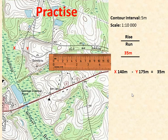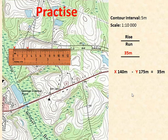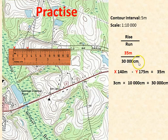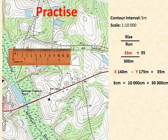Let's measure across — bringing the ruler in, that is 3 centimetres. We multiply 3 centimetres by 10,000 centimetres, giving us 30,000 centimetres. They're in the wrong units — metres and centimetres — so we scrub two zeros off, converting it to 300 metres. We divide by the numerator: 35 divided by 35 gives us 1, and 300 divided by 35 gives us 8.6. So the gradient between X and Y is 1 to 8.6.